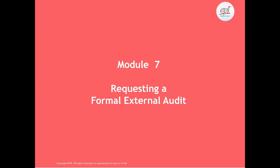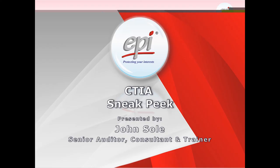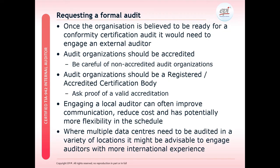Under Module 7, we will look at the process you should go through when you want to request a formal external audit. The participant should be able to describe and understand how to request a formal external audit. We go through the major parts of what you should be doing when requesting a formal audit. Once the organisation is believed to be ready for a conformity certification audit, it would need to engage an external auditor. Organisations should be accredited — they should be a registered accredited certification body.